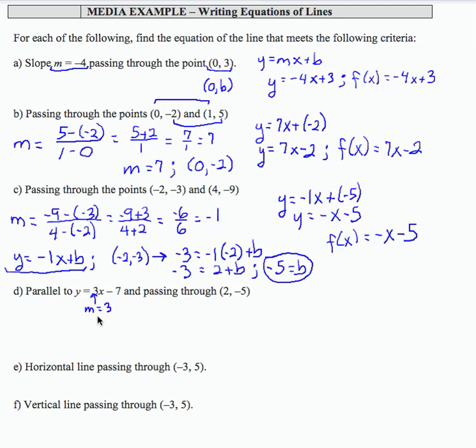So what I'm really doing is writing the equation of the line with slope m equals 3 that passes through (2, -5).